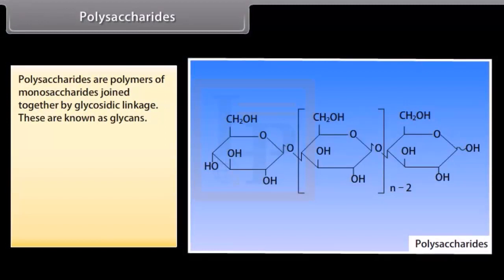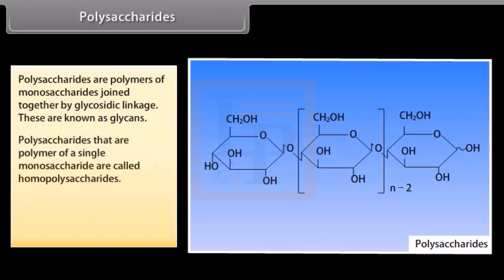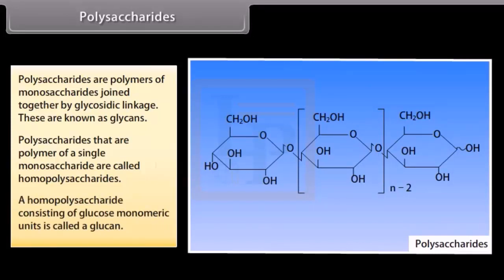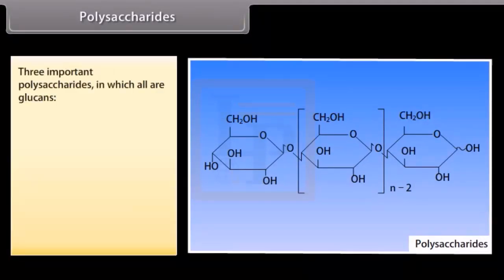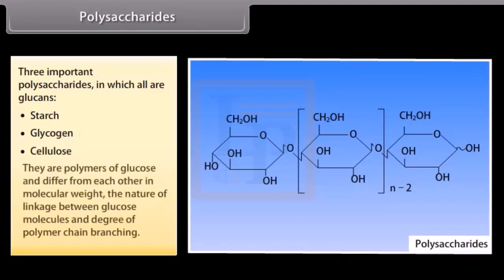Polysaccharides are polymers of monosaccharides joined together by glycosidic linkage and are known as glycans. Polysaccharides that are polymers of a single monosaccharide are called homopolysaccharides. A homopolysaccharide consisting of glucose monomeric units is called a glucan. Three important polysaccharides — all glucans — are starch, glycogen, and cellulose. They are polymers of glucose and differ from each other in molecular weight, the nature of linkage between glucose molecules, and degree of polymer chain branching.